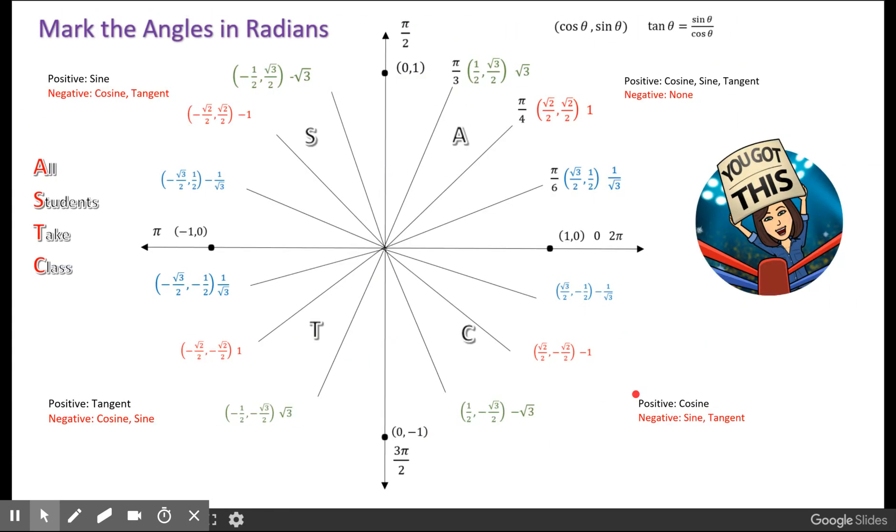Let's write the angles now in terms of radians. All the reference angles that are blue, that are reference angles with pi over 6, are going to have a denominator of 6.